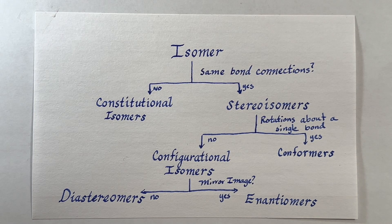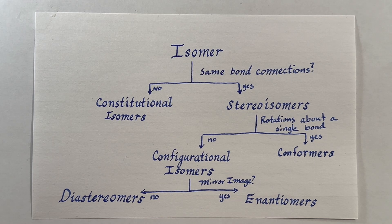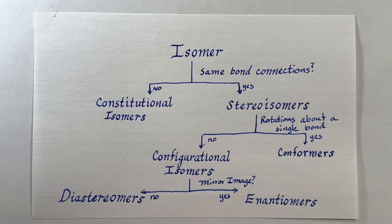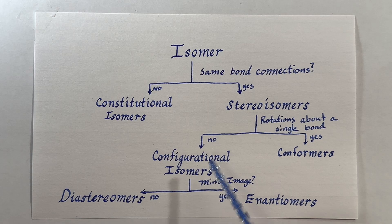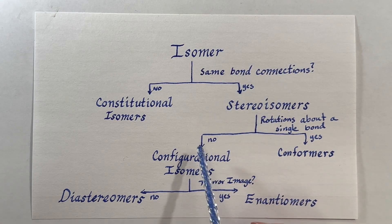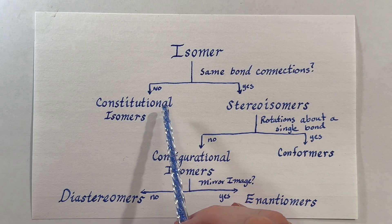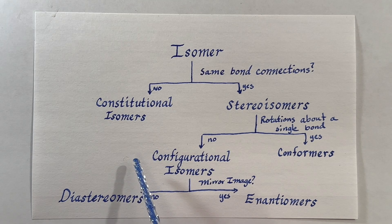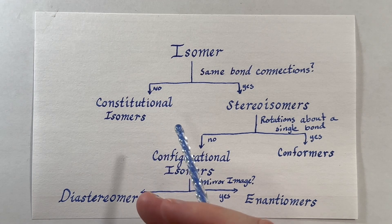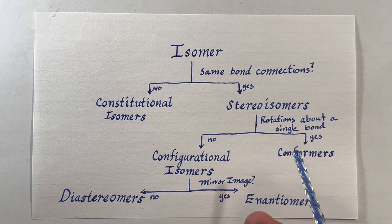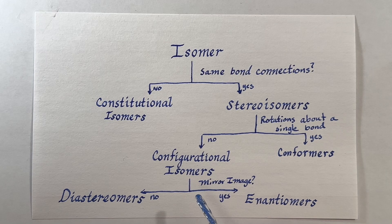For the next few videos we'll talk about isomers. Isomers are molecules that are different from each other but have the same molecular formula. We can classify these isomers by asking ourselves a few questions as outlined in this flowchart. To start off, we can ask if our isomers have the same bond connections, and if they do not, then they are constitutional isomers. A good example of this would be cyclobutane and butene.